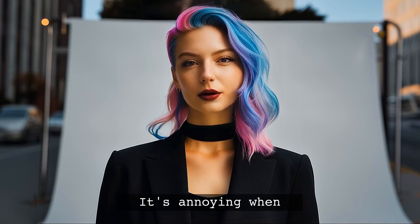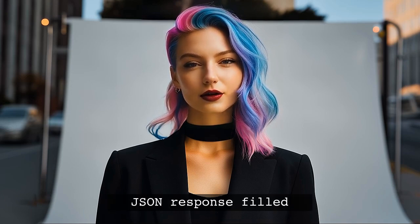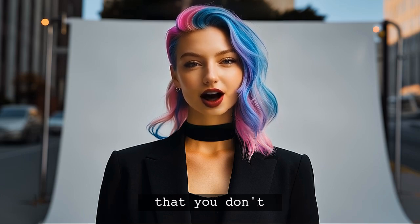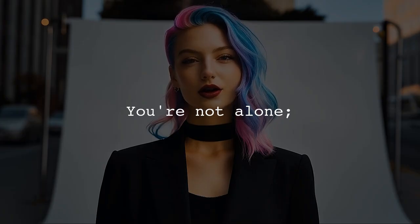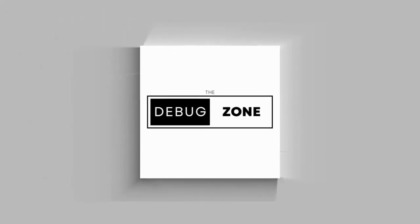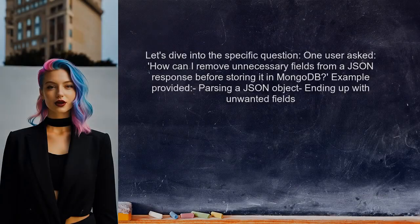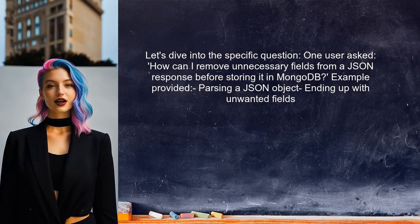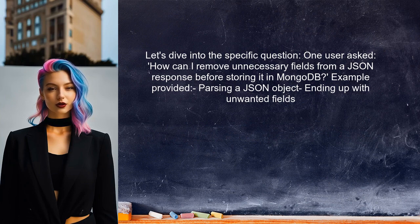It's annoying when you receive a JSON response filled with extra fields that you don't want. Many developers face this issue when working with APIs and databases. One user asked: how can I remove unnecessary fields from a JSON response before storing it in MongoDB? They provided an example where they were parsing a JSON object but ended up with fields they didn't need.